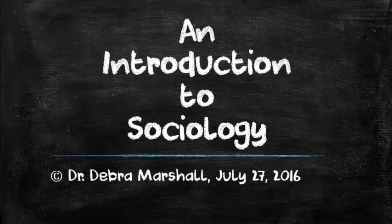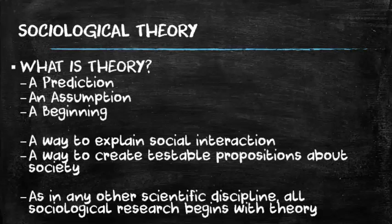So the first thing we really have to know is exactly what is a theory? A theory is a prediction or an assumption. It's a beginning phase for research, and it's a way for sociologists to explain how groups are interacting with each other, how people are interacting with each other, and it helps us to create testable propositions about society. Remember those hypotheses? We talked about the hypothesis in terms of an if-then statement. Our theory lets us think about how we want to move forward with our variables and our hypothesis.